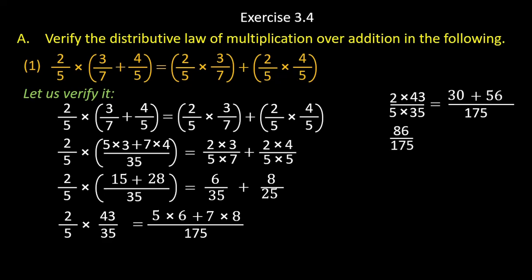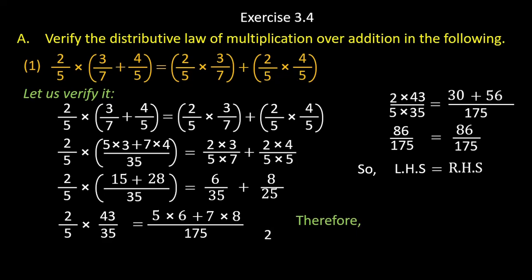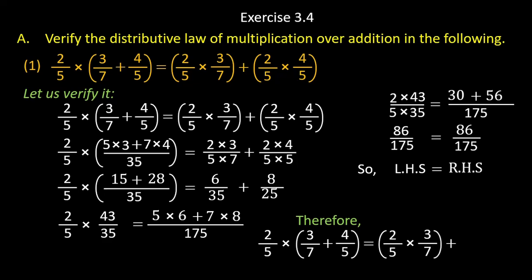Here you may see both right hand side and left hand side are equal. So left hand side is equal to right hand side. Therefore we can say that 2 upon 5 into bracket 3 upon 7 plus 4 upon 5 bracket close is equal to 2 upon 5 into 3 upon 7 plus 2 upon 5 into 4 upon 5. Hence it is proved.